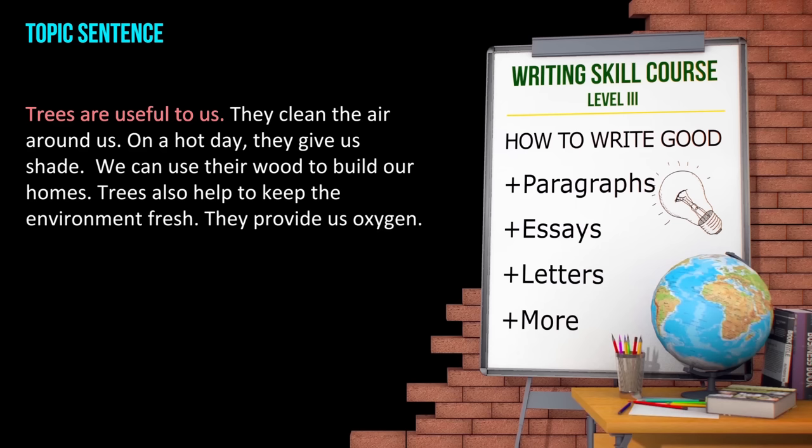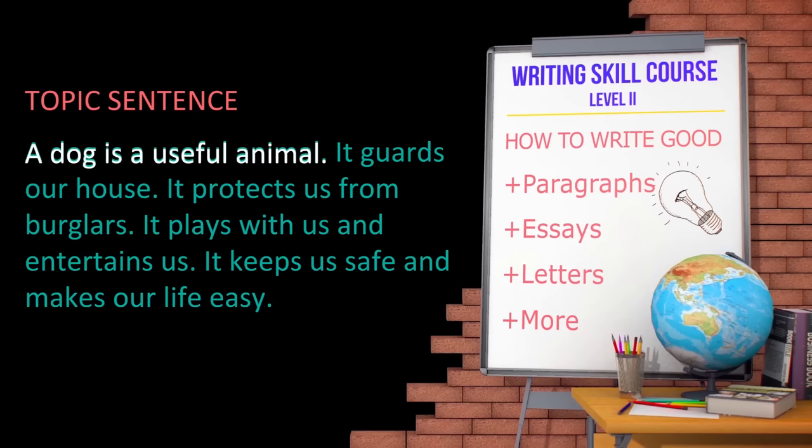It has a topic sentence and the rest of the sentences support it. This sentence says, 'A dog is a useful animal.' All the other sentences must support or prove how a dog is a useful animal. Let's see. 'It guards our house.' Does this sentence prove that a dog is a useful animal? Yes. 'It protects us from burglars.' Does this sentence support that the dog is a useful animal? Yes, of course. 'It keeps us safe and makes our life easy.' This sentence, too, supports the topic sentence. So, a good paragraph must have a topic sentence that controls the other sentences.